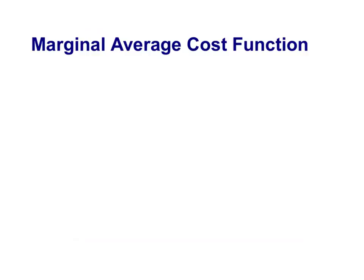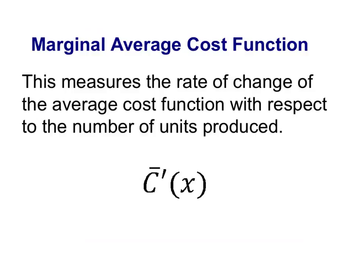One of the ways we investigate average cost is with the marginal average cost function. The marginal average cost function measures the rate of change of the average cost function with respect to the number of units produced. Before I go any further, let me point out some notation here. This bar on top of the C, that's what we're going to use to denote the average cost. So when I write C bar, I'm talking about the average cost function. When we put the apostrophe on there, that means we're taking the derivative, and in that case this is C bar prime, which is the marginal average cost function.